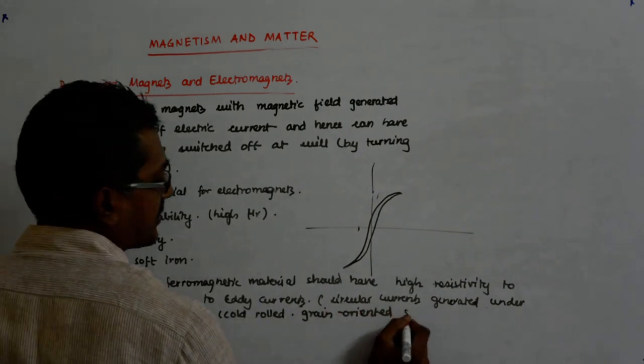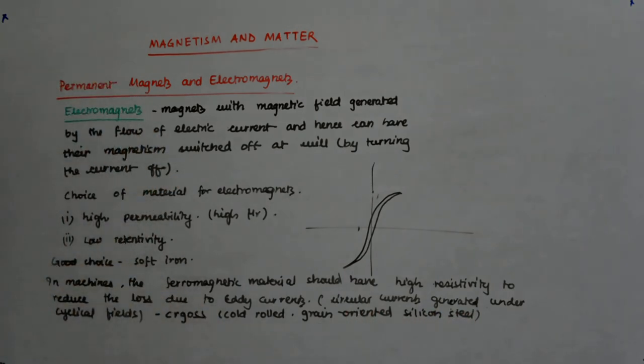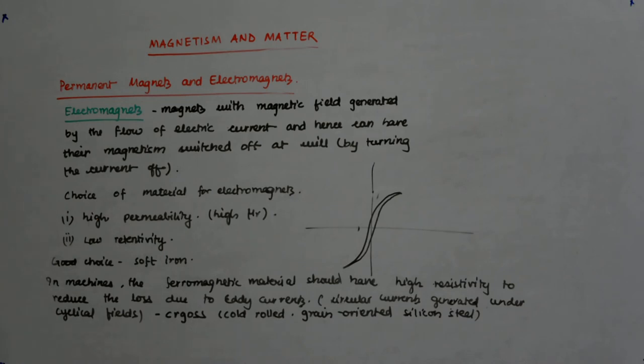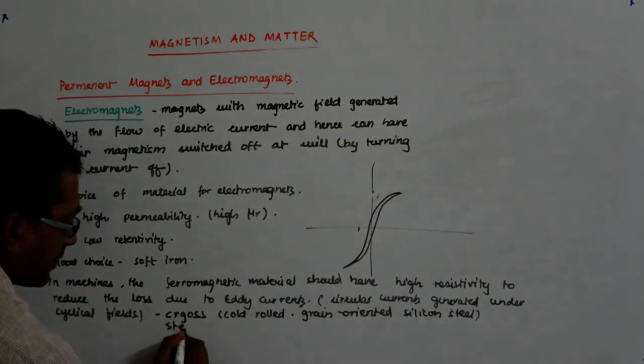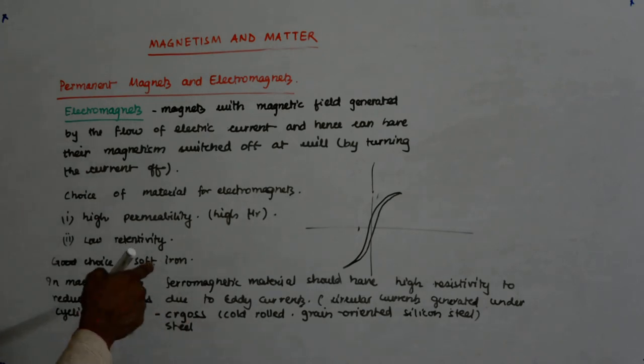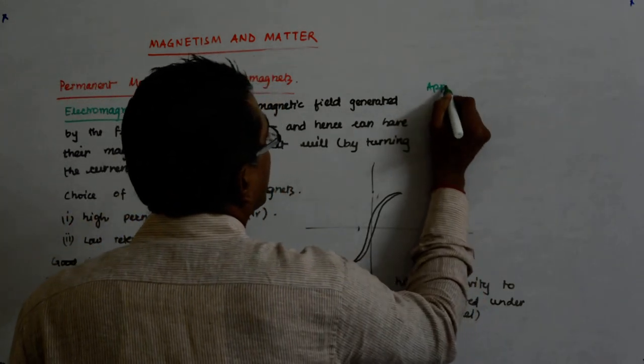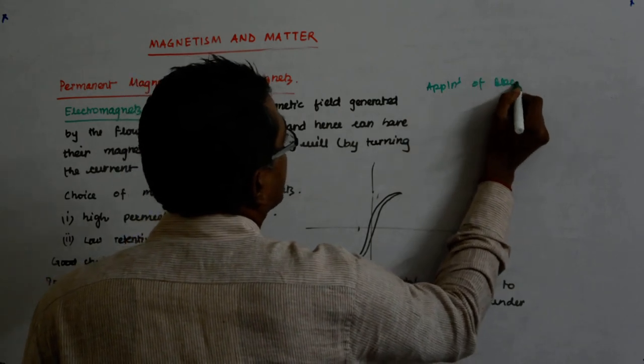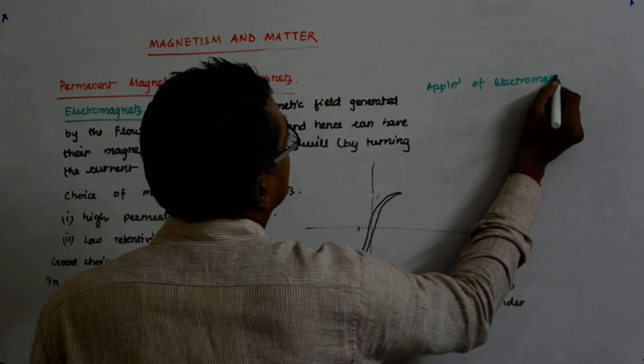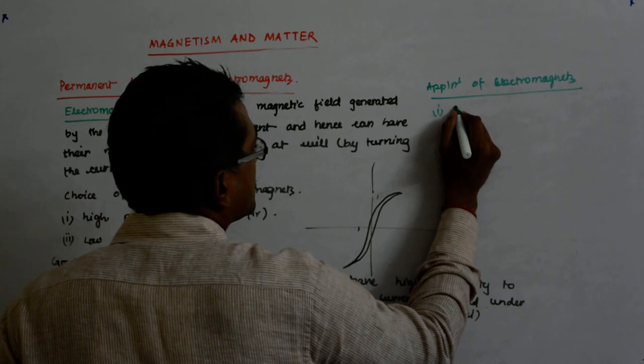That's why I use CRGOSS steel, cold rolled grain oriented silicon steel. Silicon is the material that increases the resistivity, that's why we have added silicon. The ferromagnetic material that we use is CRGOSS steel.